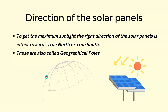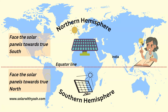These are also called geographical poles. Geographical north pole is similar to true north, and geographical south pole is similar to true south. Our earth is divided into two equal parts by the equator line. The portion above the equator line is called the northern hemisphere, while the part below is called the southern hemisphere.